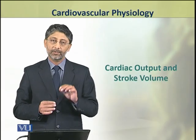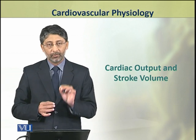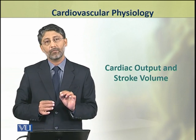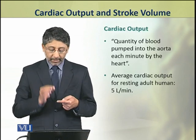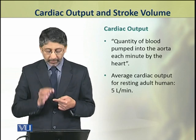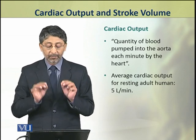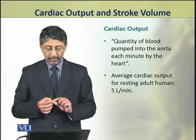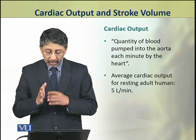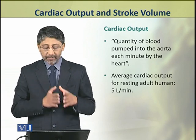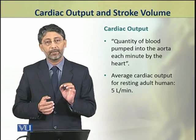Dear students, in this topic we shall discuss cardiac output and stroke volume. Cardiac output is the quantity of blood pumped into the aorta each minute by the heart. The average cardiac output for a resting adult human is about 5 liters per minute.